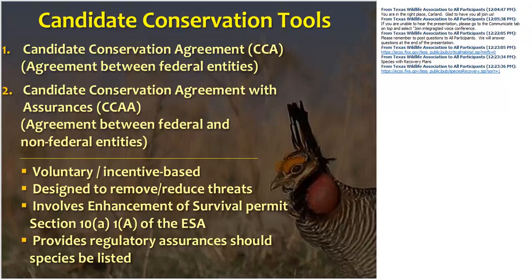Candidate conservation agreements with assurances involve a plan with measures to address threats to a species on both federal and non-federal lands, with specific conservation measures, an implementation schedule, a description of anticipated effects on the covered or candidate species, and a monitoring plan with a reporting process. If that species is ever listed in the future, the landowner is protected from further restrictions beyond what they've already agreed to. We had some CCAAs in place for the lesser prairie chicken before it was listed as threatened, and that's probably why it was listed as threatened instead of endangered — because of the conservation agreements already being implemented.